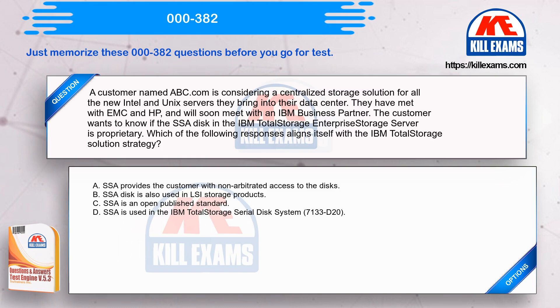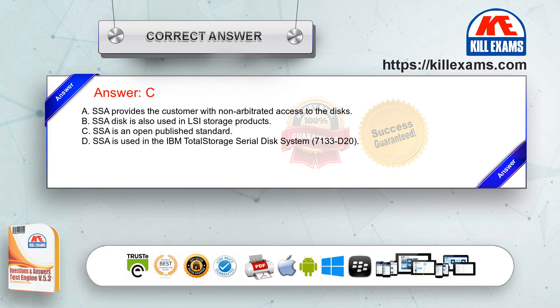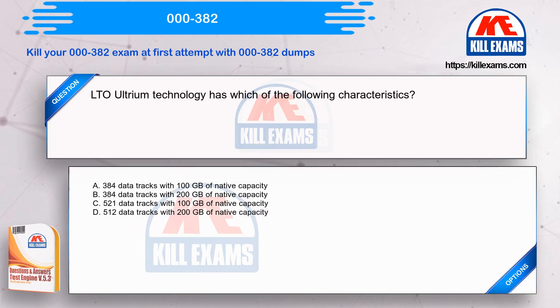Option C - SSA is an open published standard; Option D - SSA is used in the IBM Total Storage Serial Disk System 7133 D20. The correct answer is Option C. LTO Ultrium technology has which of the following characteristics? Option A - 384 data tracks with 100 gigabytes of native capacity; Option B - 384 data tracks with 200 gigabytes of native capacity; Option C - 521 data tracks with 100 gigabytes of native capacity.